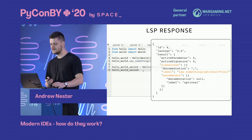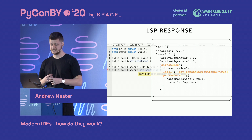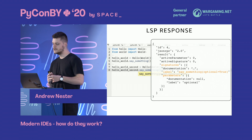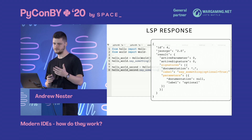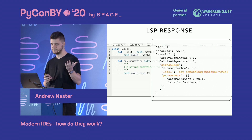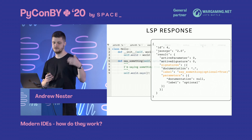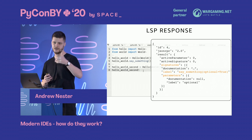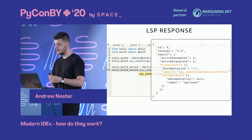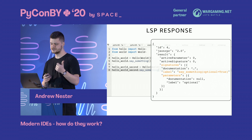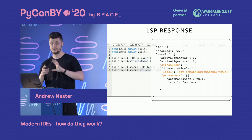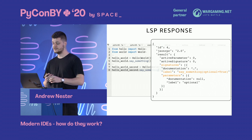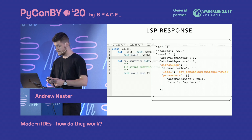The server provides you with signatures for the method. There may be multiple signatures — in Java or C++, for example, you can have multiple definitions for the same method. In our Python case, it returns one definition with documentation, a label showing how it looks in the IDE, and the parameters you need to pass.